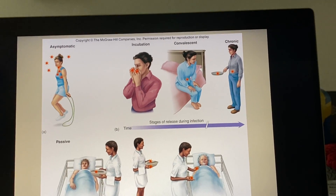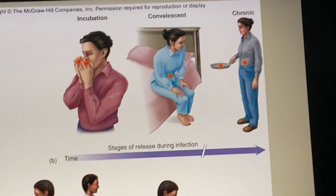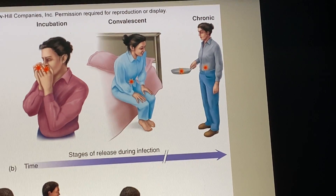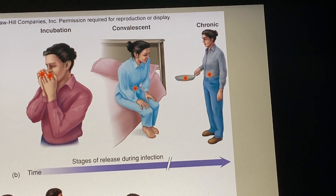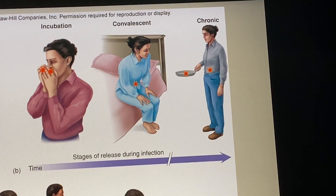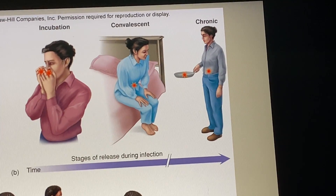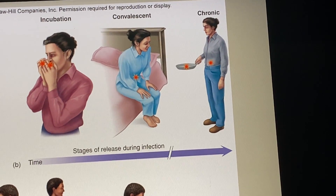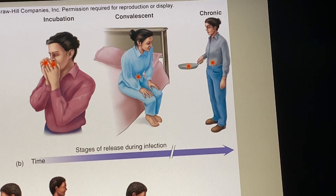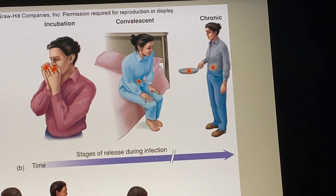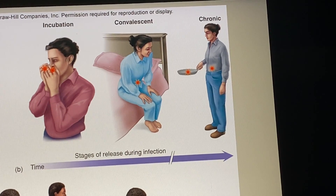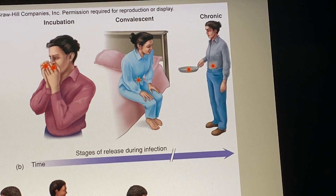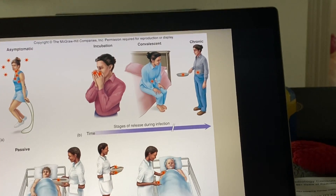A chronic carrier is someone who is harboring an organism all the time. They may have a low level of disease but are able to manage it. However, they are still able to pass that organism on to other people.